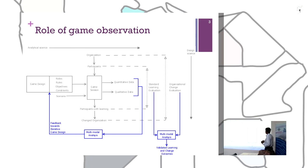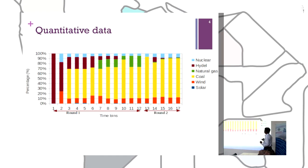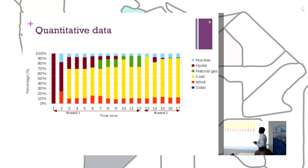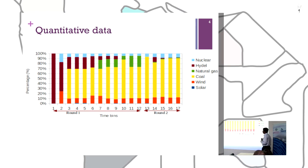Looking at the quantitative data, it could take the form of how people have distributed their money across different energy sources in the first round, and how that changes over time as the game progresses. There are also game elements like messages and information that are passed, which serve as the influence of the game.